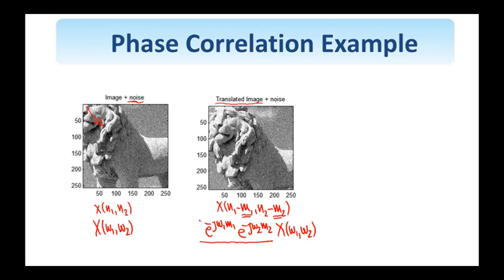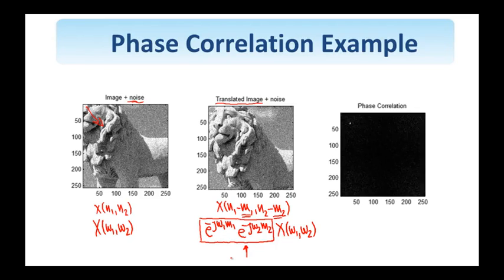If I manage to isolate this phase component, these complex exponentials, and take them back to the spatial domain, then I know that they will give rise to a delta at m1, m2. So if I do everything right, I'll obtain an image as shown here. So there is indeed a delta here.